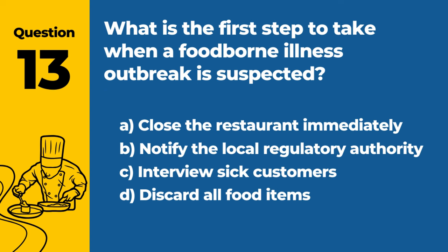Question 13: What is the first step to take when a foodborne illness outbreak is suspected? A. Close the restaurant immediately. B. Notify the local regulatory authority. C. Interview sick customers. D. Discard all food items. Answer: B. Notify the local regulatory authority. The first step when a foodborne illness outbreak is suspected is to notify the local regulatory authority for guidance and investigation.